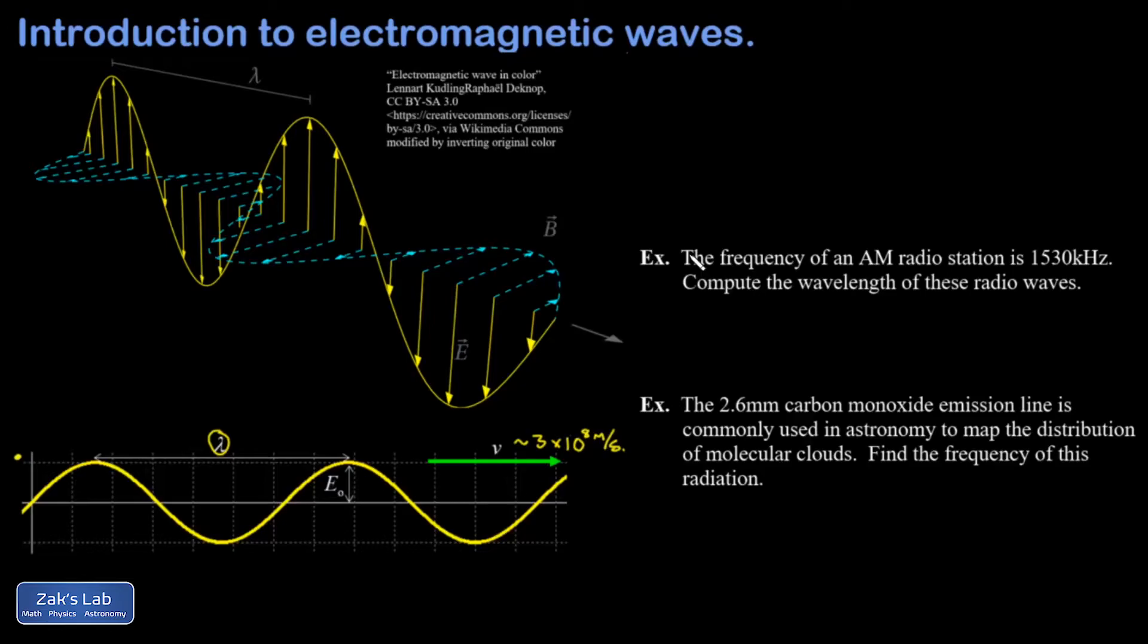Electromagnetic waves follow the same speed, frequency, and wavelength relation as a wave on a string. That's V equals F lambda, where the frequency is the frequency of the wiggling of this electric field. I've already explained what the wavelength is. And then the speed is the speed of light, which we normally use the symbol C for. So we can replace the V in this equation with a C, and we get C equals F lambda.